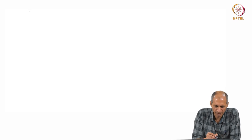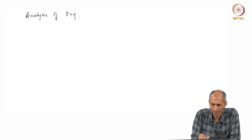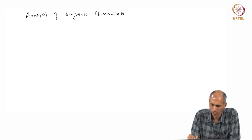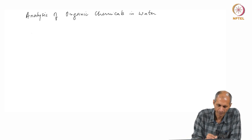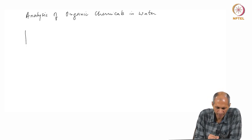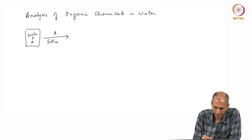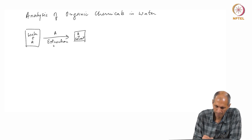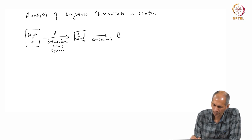Last class we started discussing the analysis of organic chemicals in water. We looked at the process: we have a water sample plus analyte A, we remove A by extraction. We add solvent (A plus solvent), then concentrate to a smaller volume, and this goes into the analytical instrument to get concentration data.